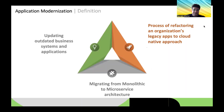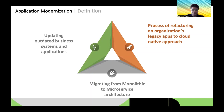Another way to define it is updating outdated business systems and applications. It is the process of taking existing on-premises applications and modernizing them, which may involve migrating those applications to various cloud environments — private, public, or hybrid — in other words, migrating away from monolithic architecture.